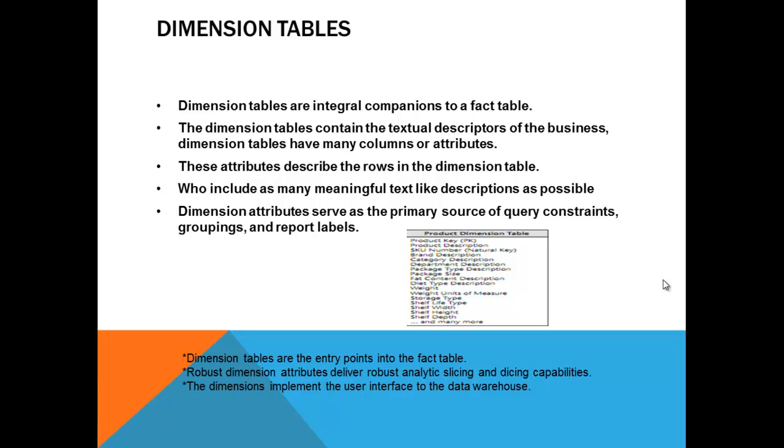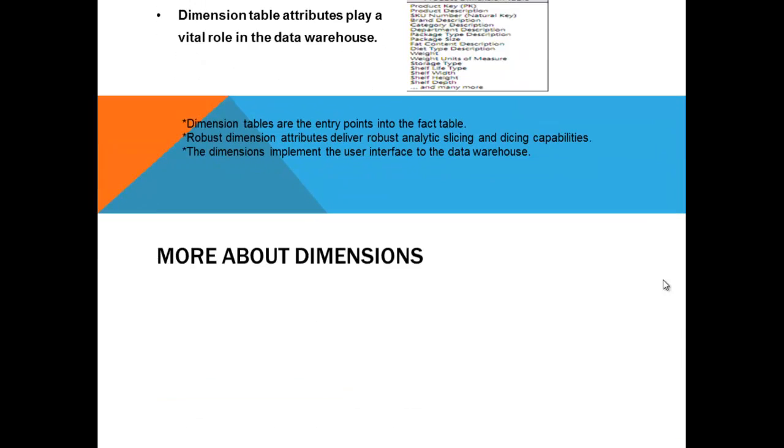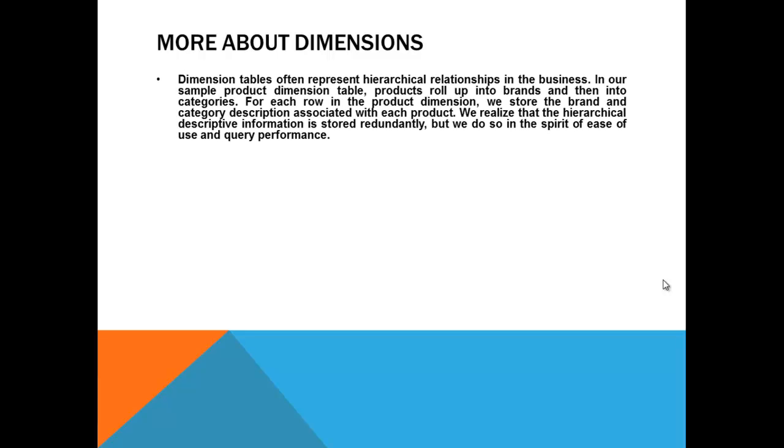You are not going to query a fact table and find out what is the revenue generated for today. You will say what is the revenue generated today, where it is a where clause. Group by store, where it is a grouping condition. Order by store number. You have an order by clause. That's a report label kind of thing. So that is where your report points into. It will not directly go to a dimension table or to a transaction table. A report is a combination. The delivery being made from both the places. Dimension table attributes play a very important or vital role in the data warehouse.